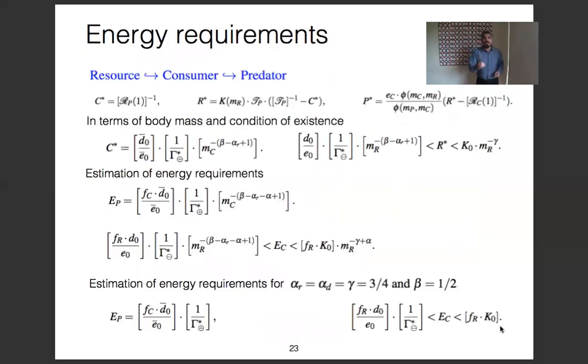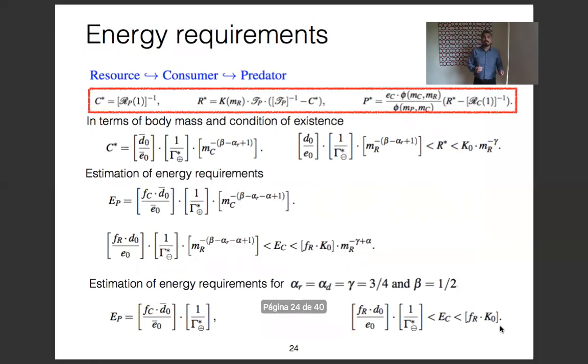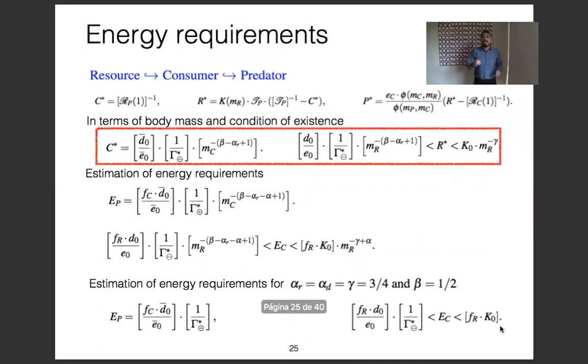In the resource-consumer-predator system, by equalizing the derivative to zero, we obtain the abundance in equilibrium from the three species. According to this representation, we express the abundance of the intermediate consumer in terms of body mass and consider conditions for the abundance of the basal resource, which guarantees that these abundances are positive.